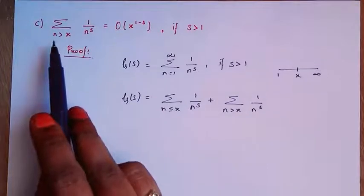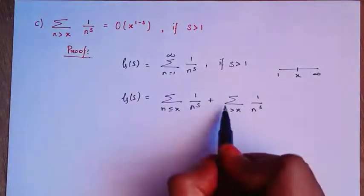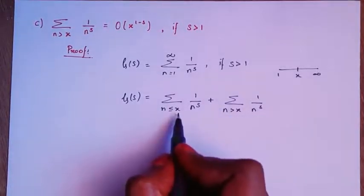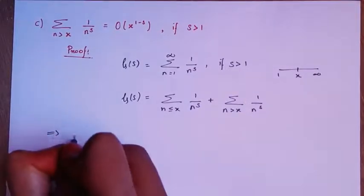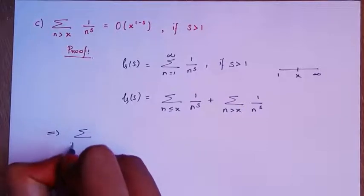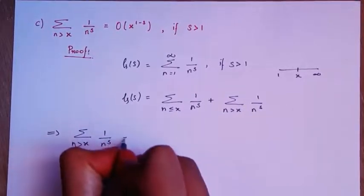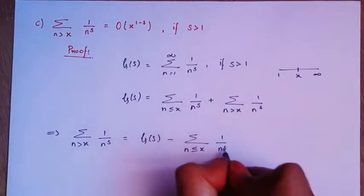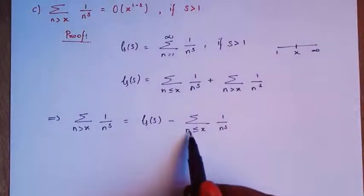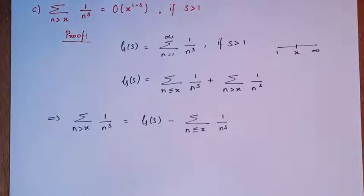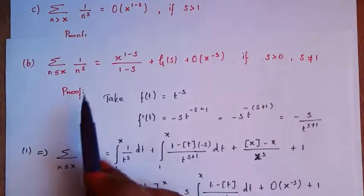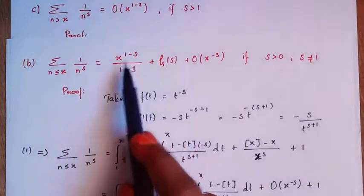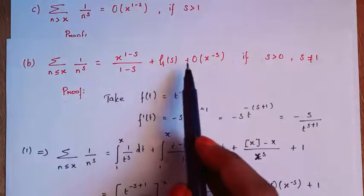In this problem we have to find the value for the sum over n greater than x. So we keep that term and bring the other term to the left side. We get: sum over n > x of 1/n^s equals zeta(s) minus sum over n ≤ x of 1/n^s. We have already found the value for this second term in Part B: sum over n ≤ x of 1/n^s equals x^(1-s)/(1-s) plus zeta(s) plus big O of x^(-s).